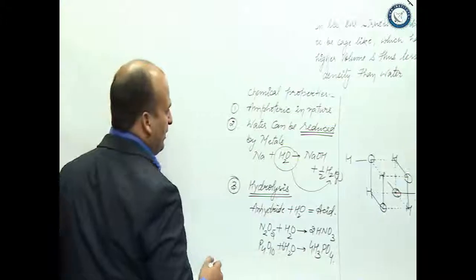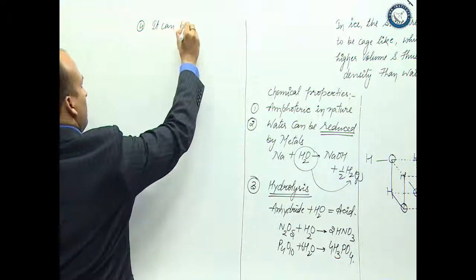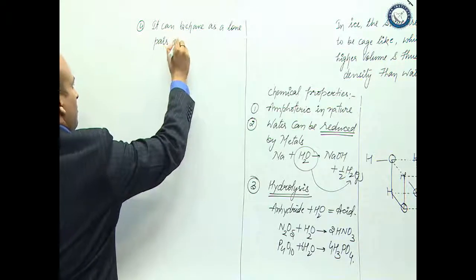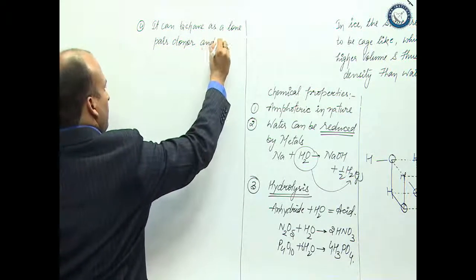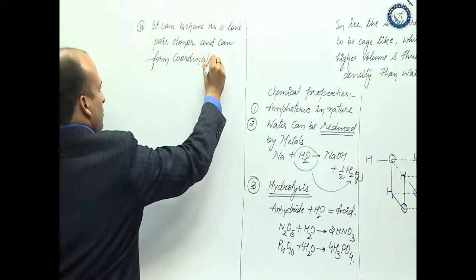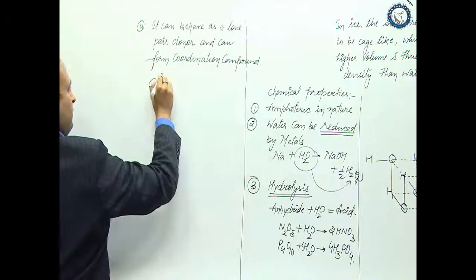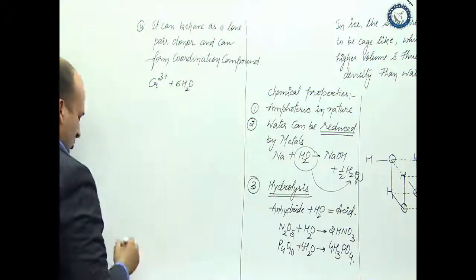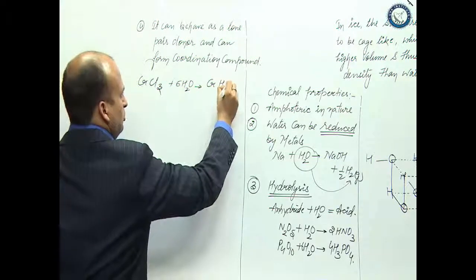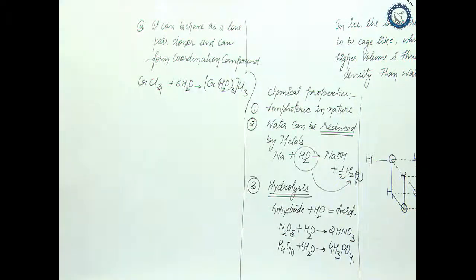It can behave as a lone pair donor and can form coordination compounds or complex compounds. For example, CrCl3 plus 6 H2O will give you Cr(H2O)6Cl3. This is a coordination compound.